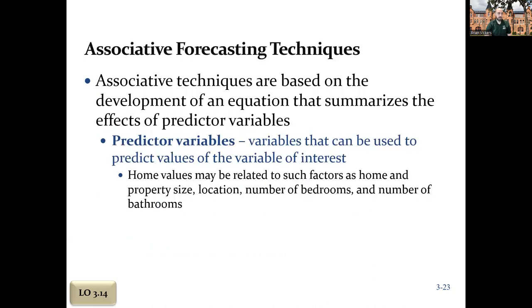Associative forecasting techniques - this would be some sort of predictor variable. I talked earlier about home values related to property size, where it's located. If it's in this zip code, we can assume the price is going to be higher. Number of bedrooms, number of bathrooms. Some sort of association between this value and this value.